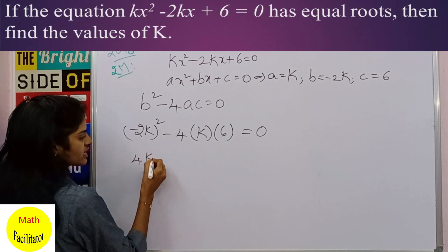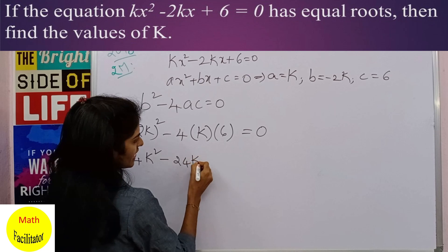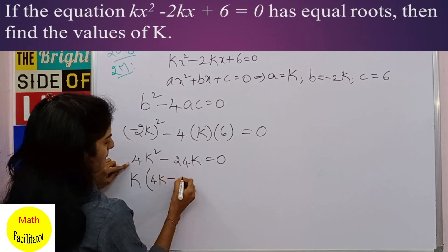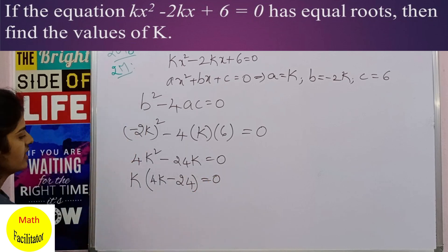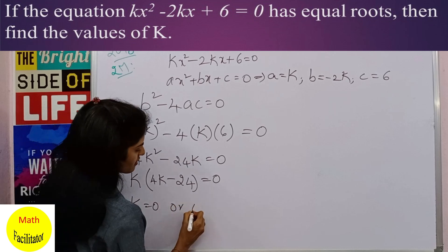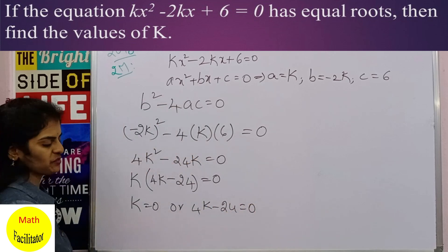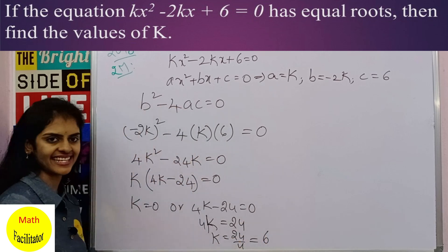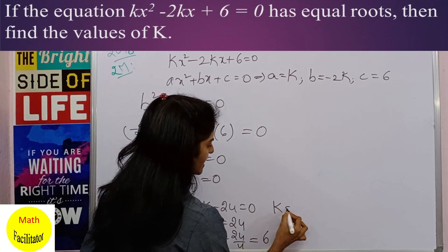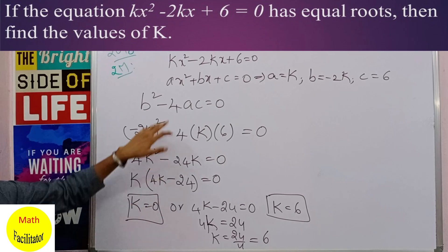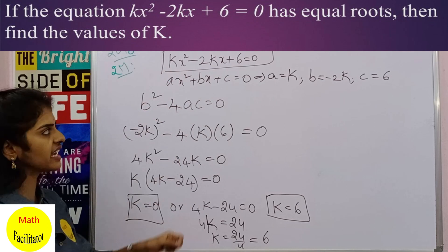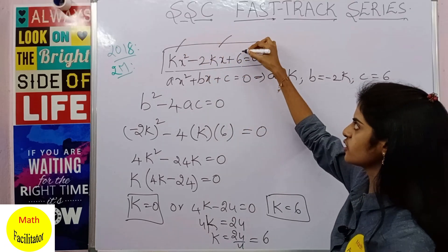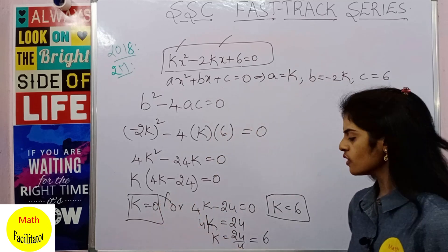Substituting into the discriminant: (-2k)² - 4(k)(6) = 0, which gives 4k² - 24k = 0. Taking k as common: k(4k - 24) = 0, so k = 0 or 4k - 24 = 0, giving k = 6. If k = 0, the equation reduces to a constant and is no longer quadratic, so k = 6.